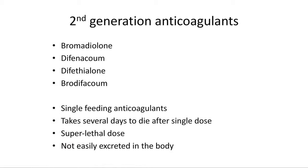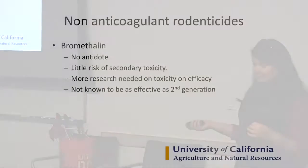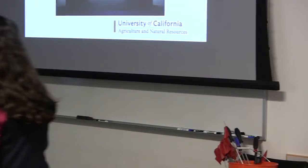Second-generation anticoagulants — brodifacoum and difethialone being the most toxic — are single-feeding anticoagulants. After one feeding there's generally enough toxin to kill the rat, but it takes three to seven days to die. The rat goes back and eats more rodenticide, which isn't processed in the liver, creating a super-lethal dose — that's the source of secondary toxicity. Bromethalin has no antidote but very little risk of secondary toxicity; however, it's not as effective as second-generation anticoagulants.